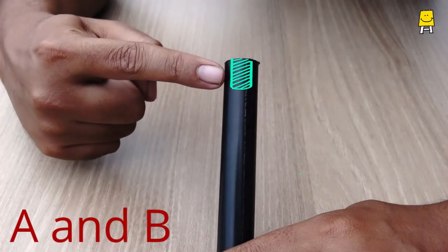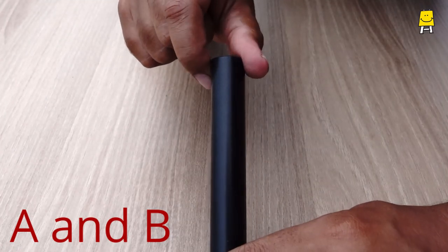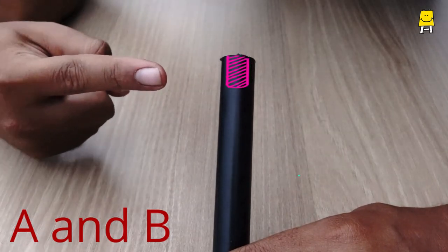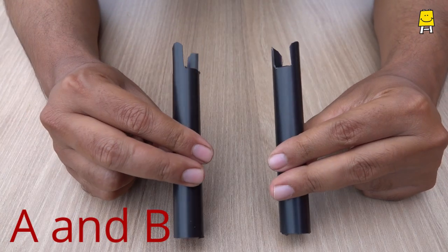Mark the shape as shown in the video on both pipes opposite to each other at one of the ends. Cut off the shape with the help of a cutter.